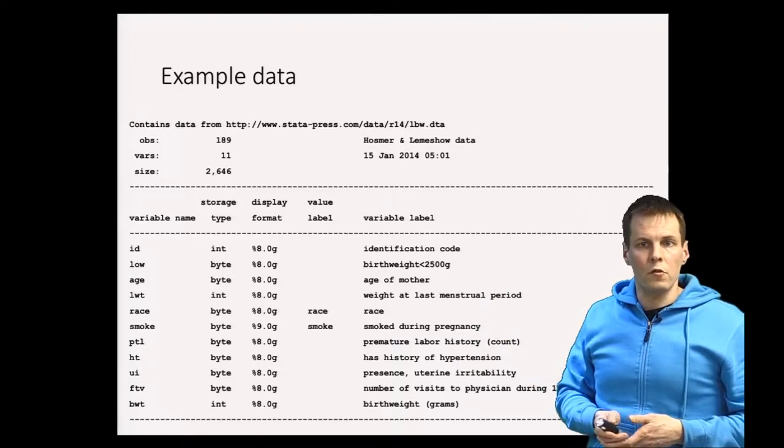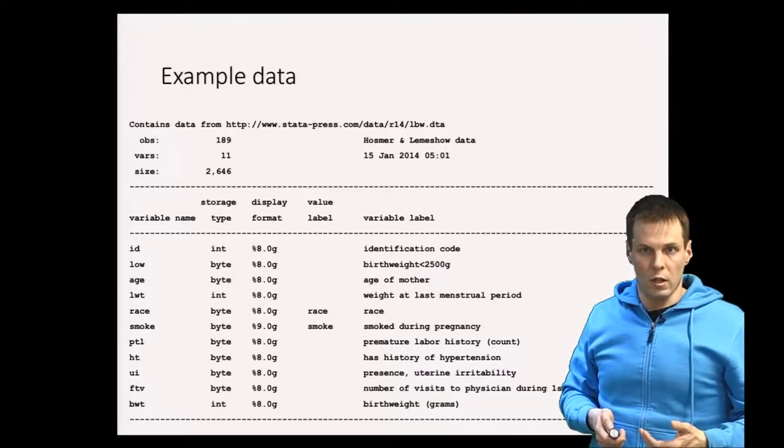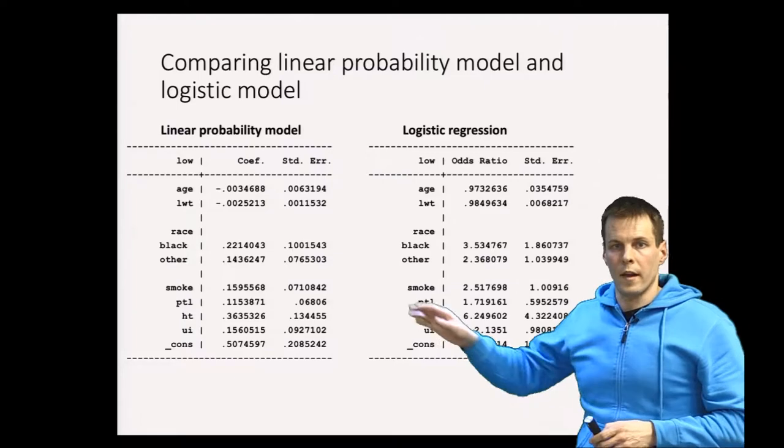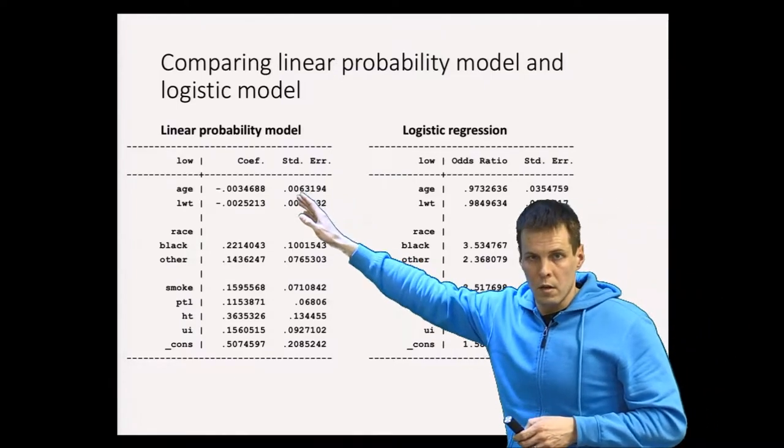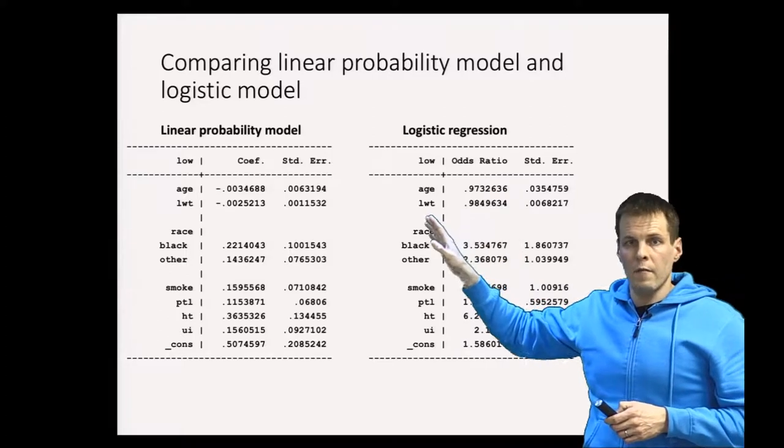We are first going to fit a linear probability model and logistic regression model to this data, and I'm using STATA here. We have the linear probability model here and we have the logistic regression model here, and the dependent variable was the low birth weight.